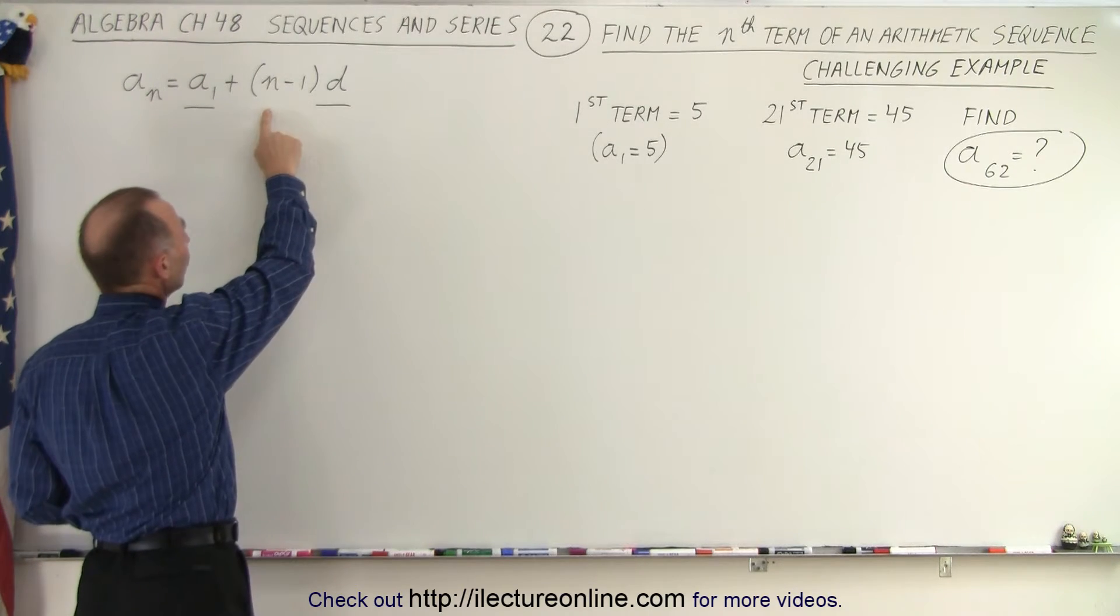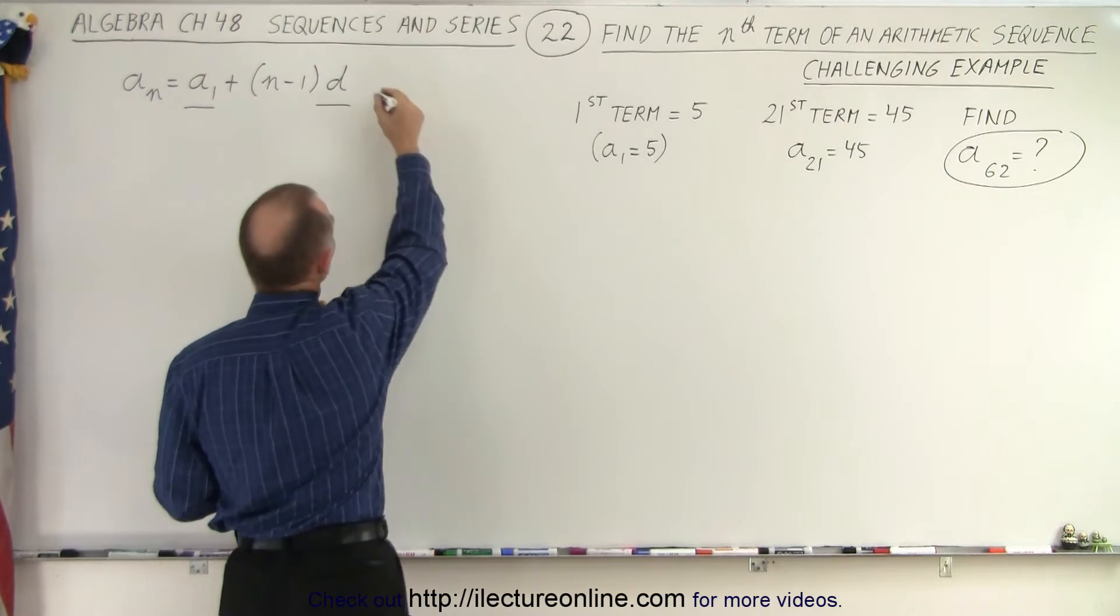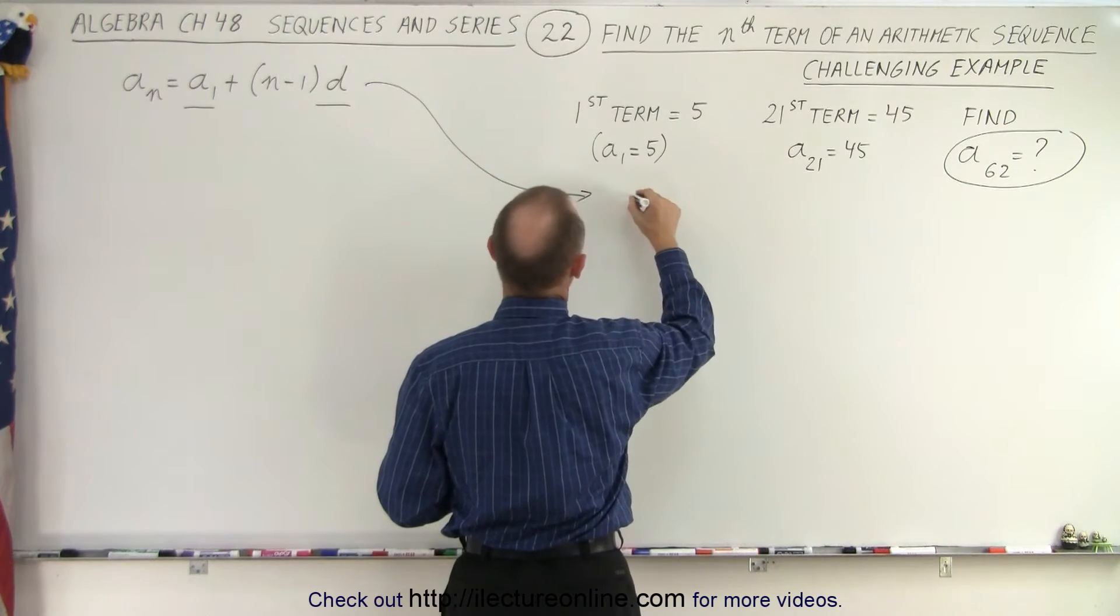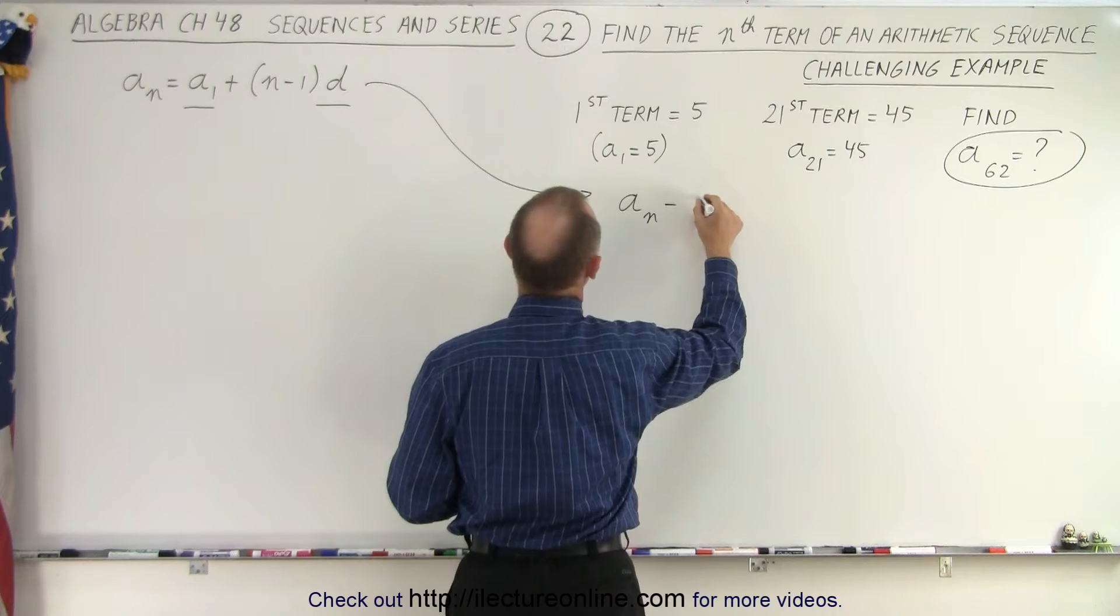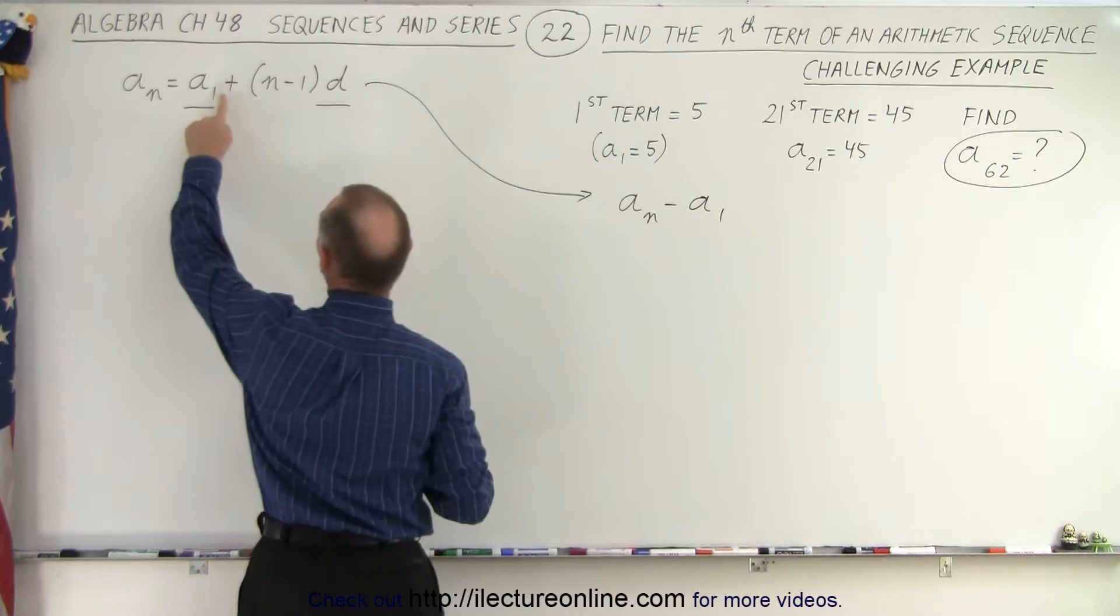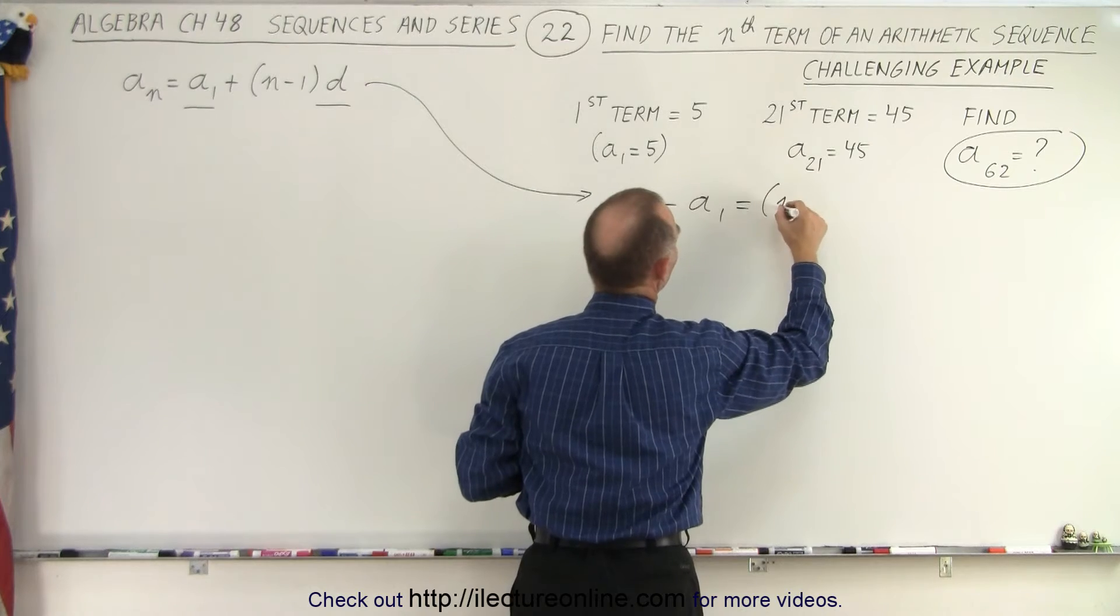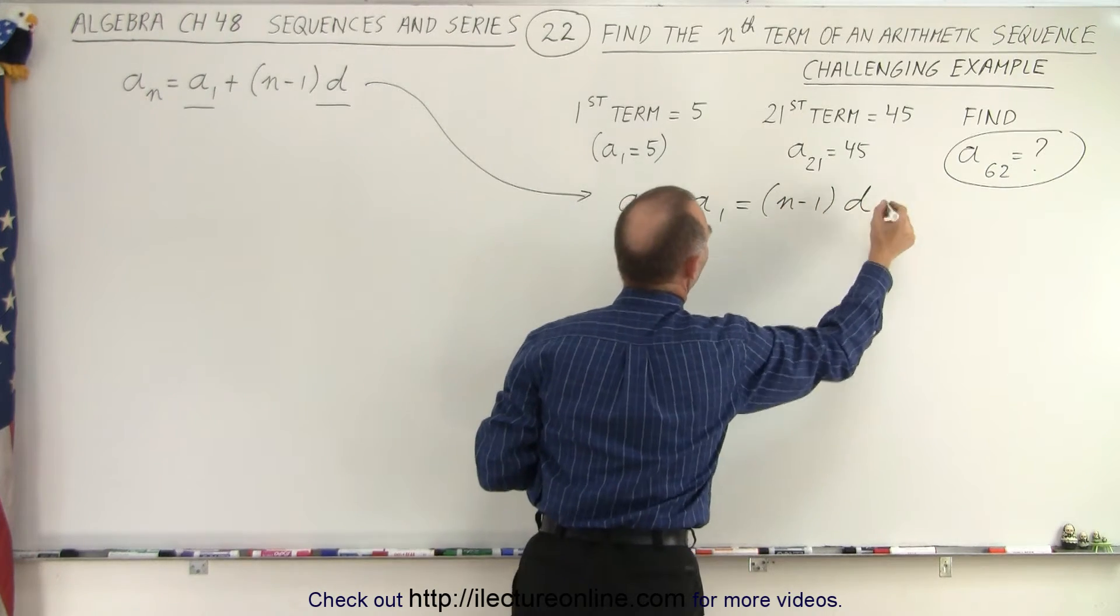Let's take this equation and solve this for D. So that's what we're going to do. We're going to take this equation over here and write it as follows. We can write that A sub N minus A sub 1 by moving A sub 1 to the left side and set that equal to the quantity N minus 1 times D.